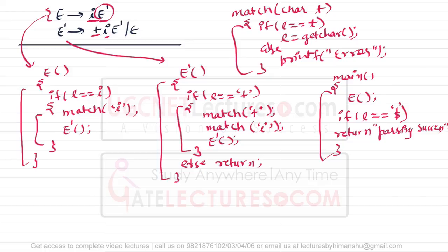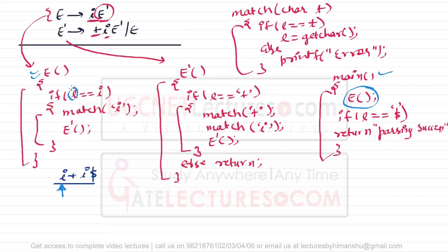Let me explain how it works by parsing the string i plus i. We want to check whether this grammar generates i plus i, so we append dollar to the input. Execution starts from the main function — we call function E. L is defined as l = getchar(), so we take the first character which is i. Since l equals i, the condition matches, so we call the match function, which confirms the match and increments the pointer, then we call E-dash.